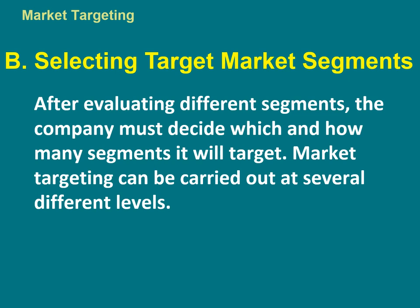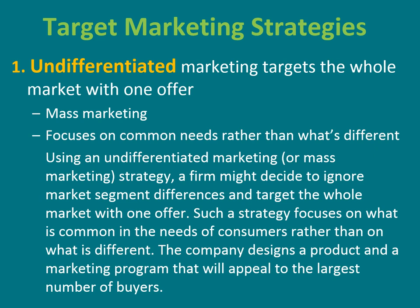Step two: selecting a target market segment. Here we should decide which segment we will go after. If we target the whole market with one market offering, we are speaking about the undifferentiated targeting strategy — also called mass marketing, total marketing, or the universal approach. It targets the whole market with one market offering, focusing on common needs rather than differences.